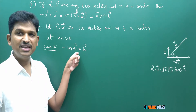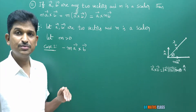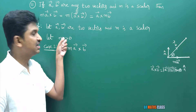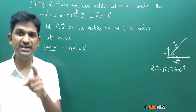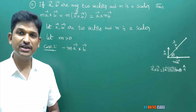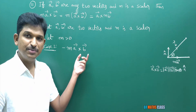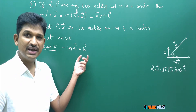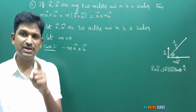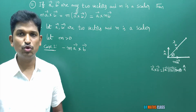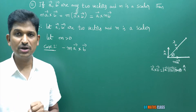Now I am calculating (-m)·(a̅ × b̅). Throughout this proof m is positive, so -m is negative. What I am trying to prove here is that (-m)·(a̅ × b̅) = -m(a̅ × b̅). At the end you will get more clarity after completion of the second case.